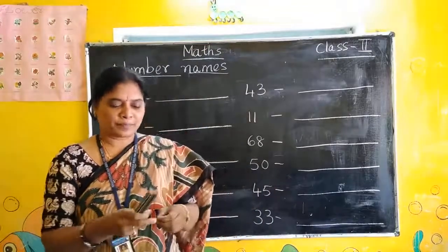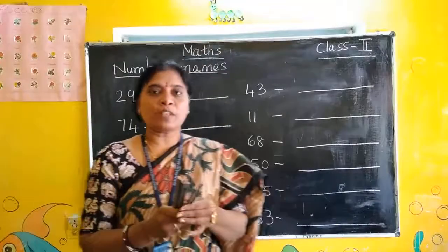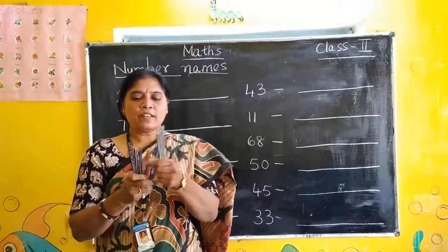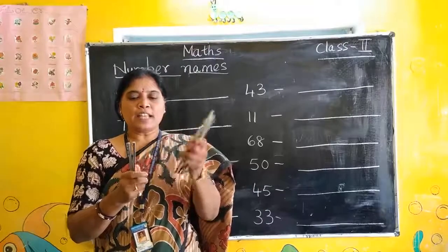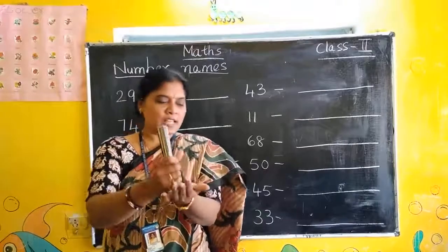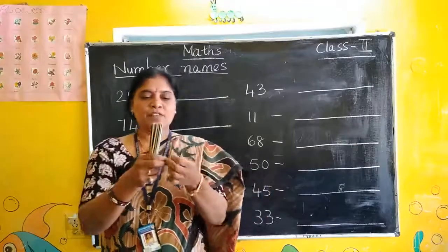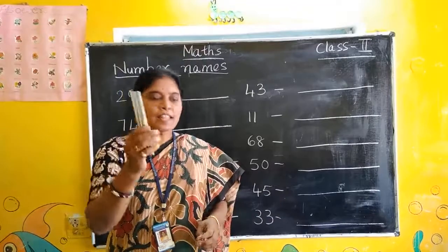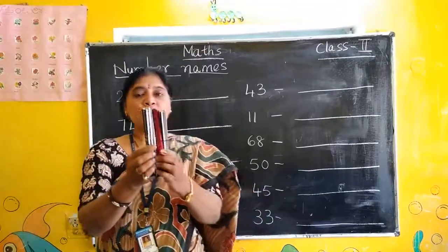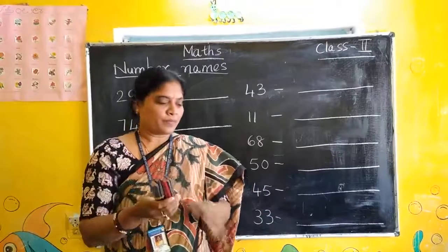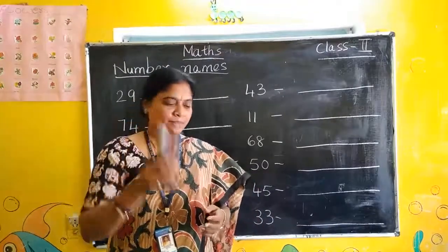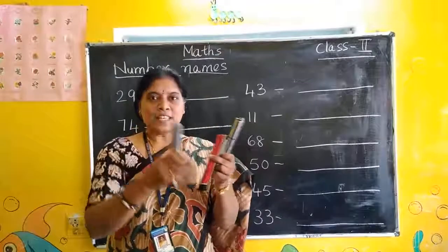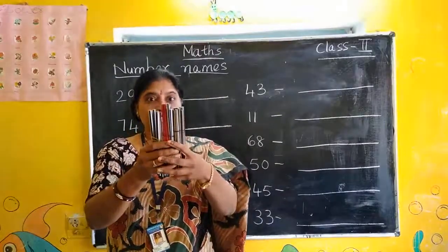How many pencils are there? Count along with me: 1, 2, 3, 4, 5, 6, 7, 8, 9, 10. These 10 pencils I am making as 1 set. Look here — this is 10. Like that one more — if we add this, that is 20. Then 20, 30.